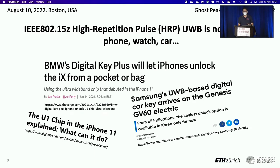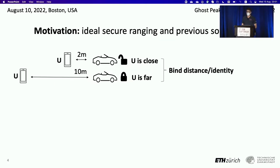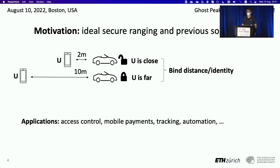Nowadays, the high repetition pulse HRP mode of ultra-wideband is deployed in phones, cars, and other objects. For example, you can open your BMW car simply by keeping your iPhone in your pocket and walking close by. Ultra-wideband secure ranging is useful because it can bind distance with identity, and this helps in applications like access control and mobile payments and so on.